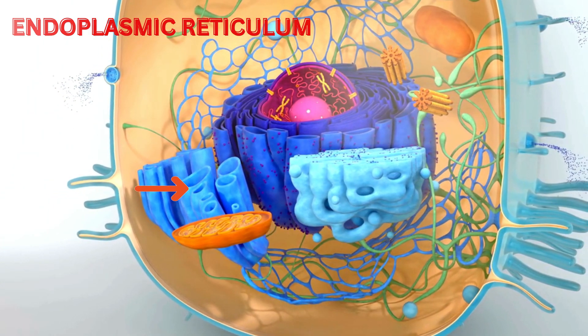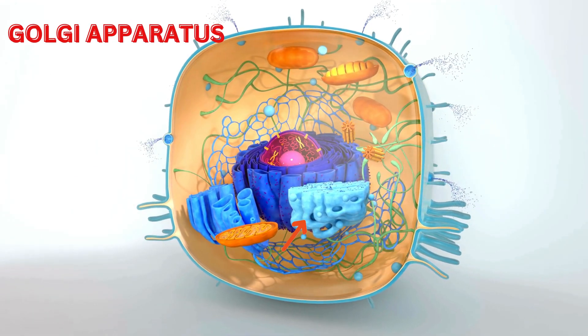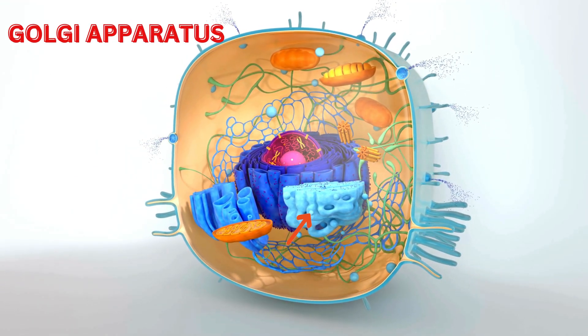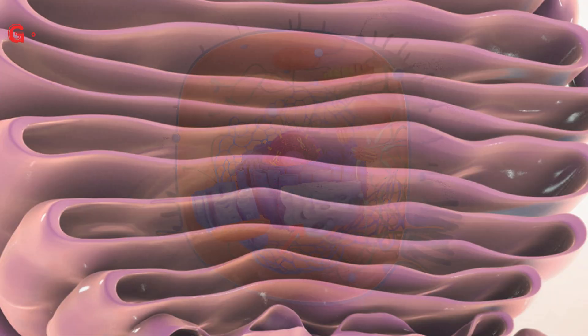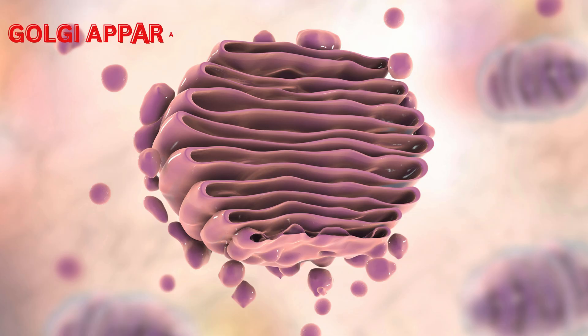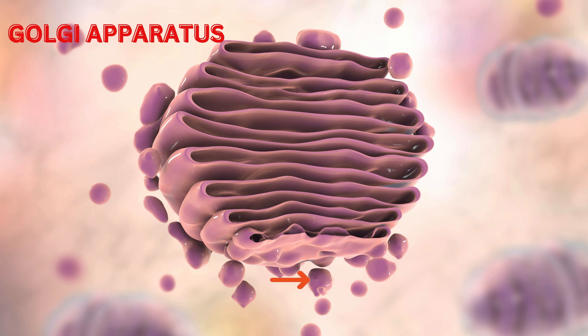Golgi Apparatus Function. The Golgi apparatus processes, sorts, and modifies proteins and lipids synthesized in the endoplasmic reticulum. It packages these molecules into vesicles for transport to other cellular destinations, such as the plasma membrane or lysosomes.